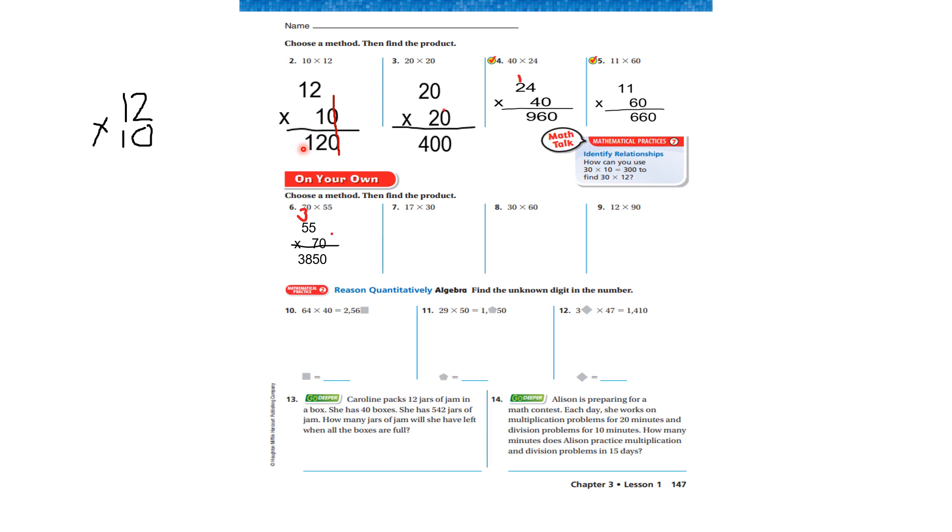Now, let's look at this problem, 20 times 20. Again, I moved my zero over here to remind myself to put it on the paper there. I moved it down is all I did. Two times zero is zero. Two times two is four. The answer is 400. Do you kind of see the pattern here?